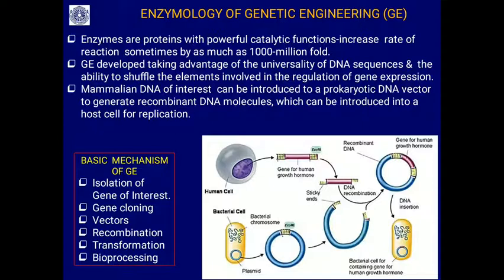The entire genetic engineering operations are mainly based on enzymes and enzymatic activities. We can bring desired effects using these enzymes. Enzymes are proteins with powerful catalytic functions that increase the rate of biochemical reactions, sometimes as much as a thousand to a million fold. Genetic engineering developed by taking advantage of the universality of DNA sequence and the ability to shuffle elements involved in the regulation of gene expression.